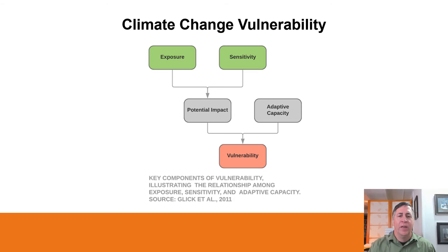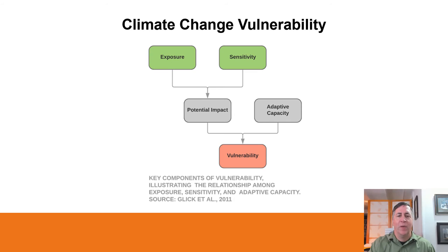The vulnerability of a species, ecosystem, or human community to climate change is a factor of exposure, sensitivity, and adaptive capacity. Exposure measures the local change in climatic conditions. Sensitivity measures how much that change might affect a certain species, ecosystem, or community. And adaptive capacity measures the ability of a species, ecosystem, or community to respond to the threats.